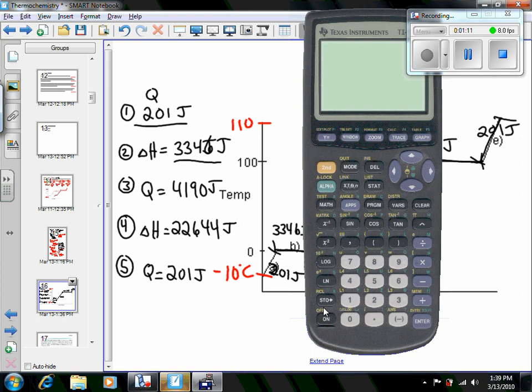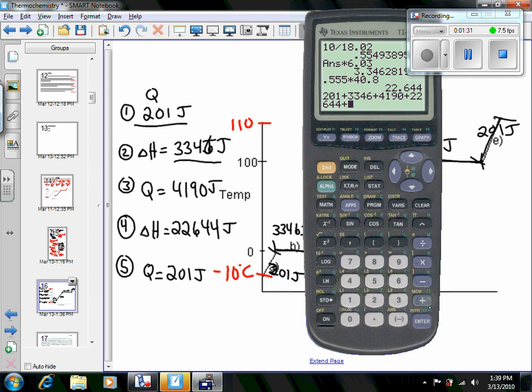Then we take all of our numbers and add those up. So we had 201, and we were adding 3,346, and not multiply, but add 4,190, add 22,644, and add up another 201. And your total energy is 30,582 joules.